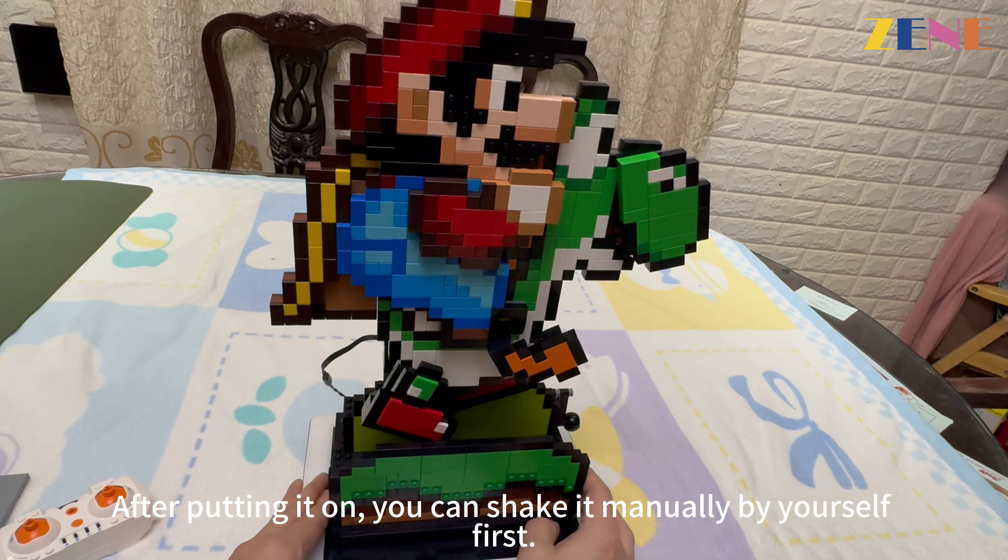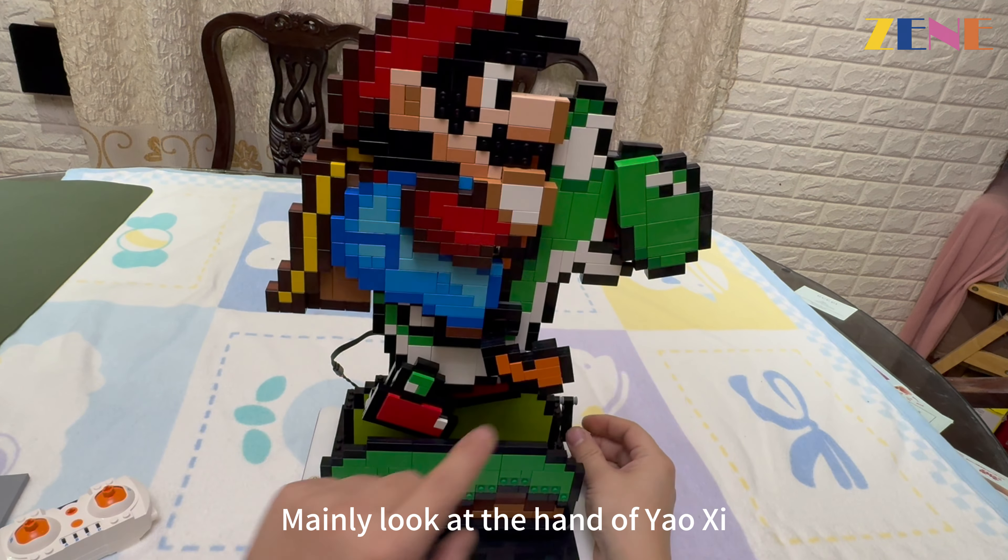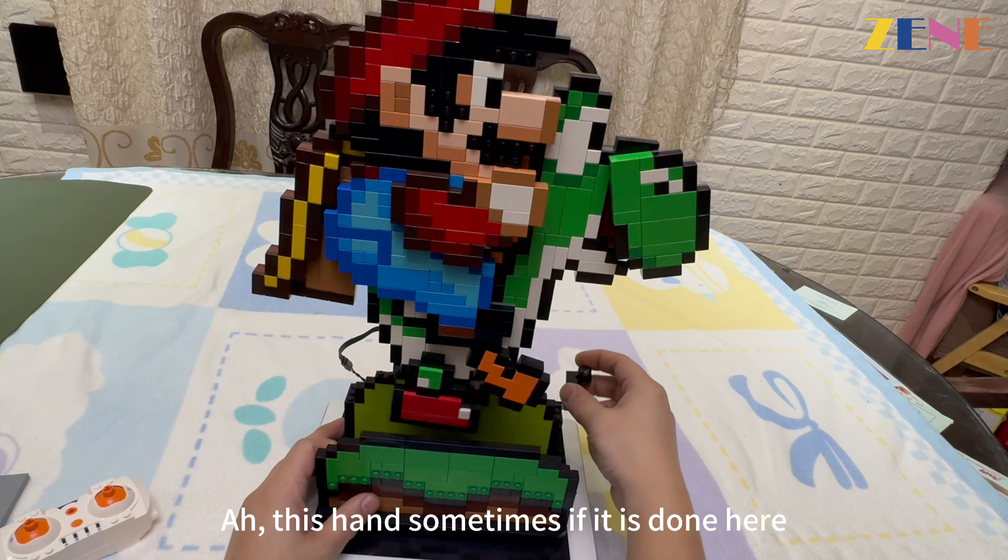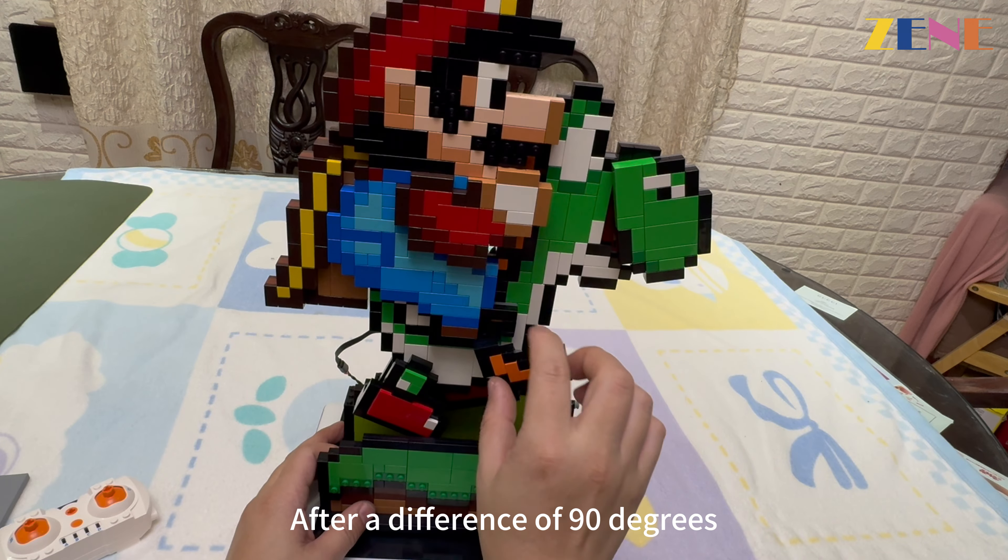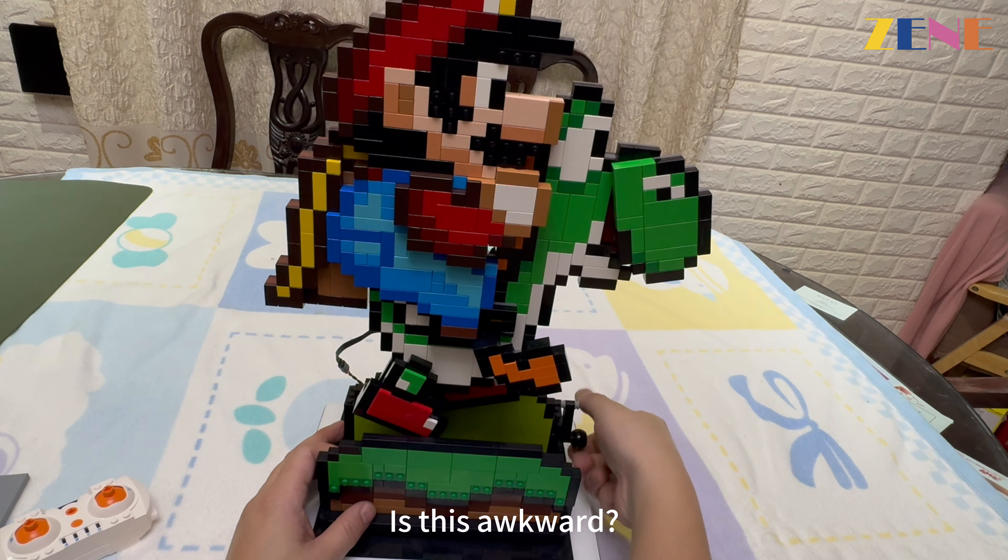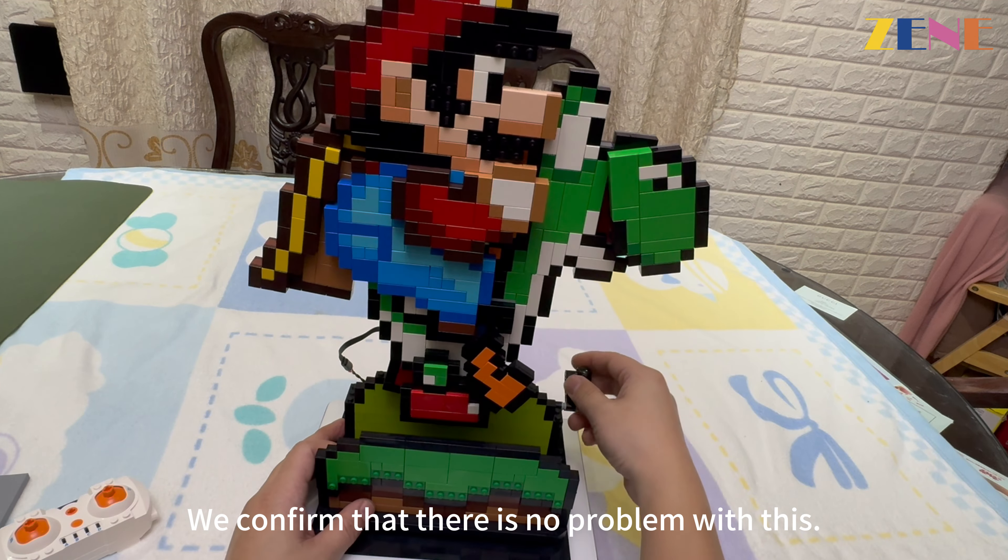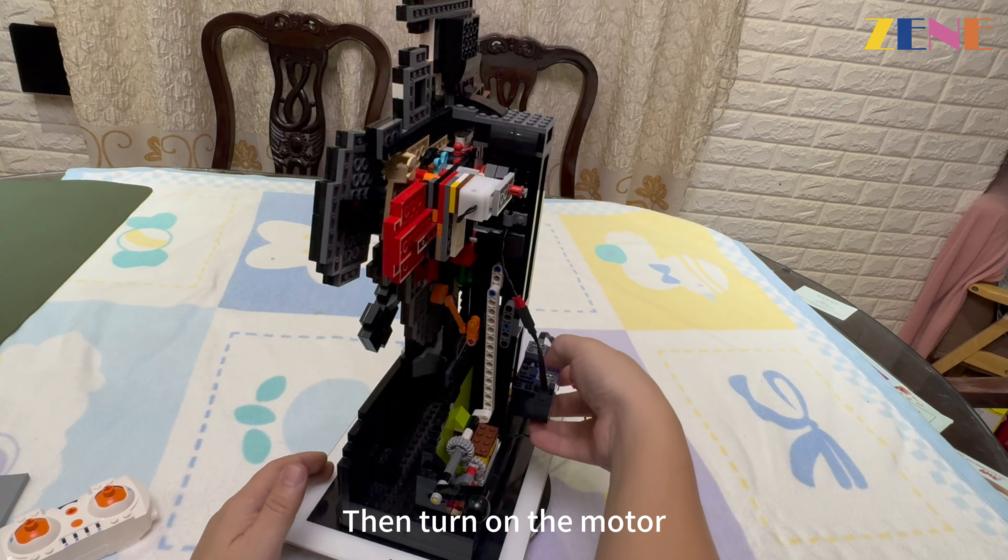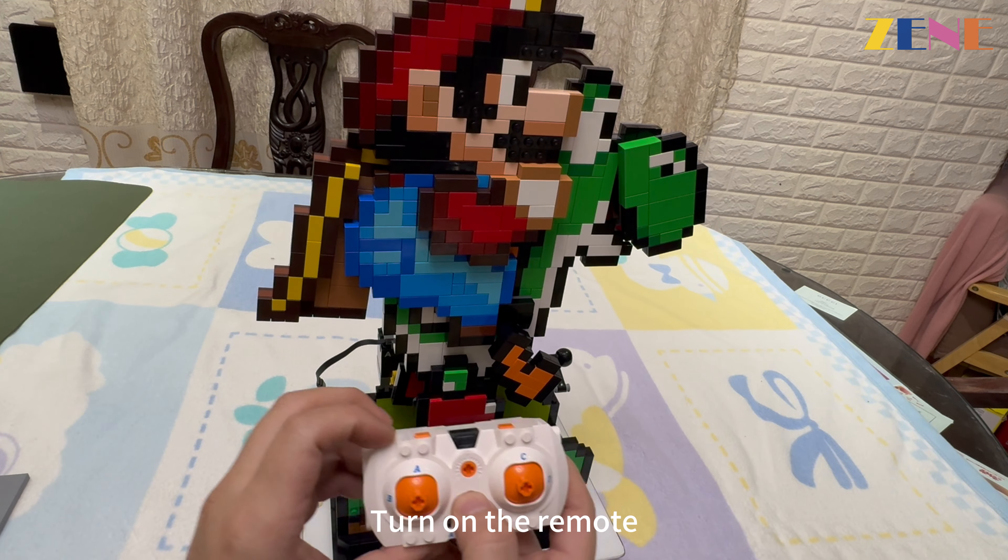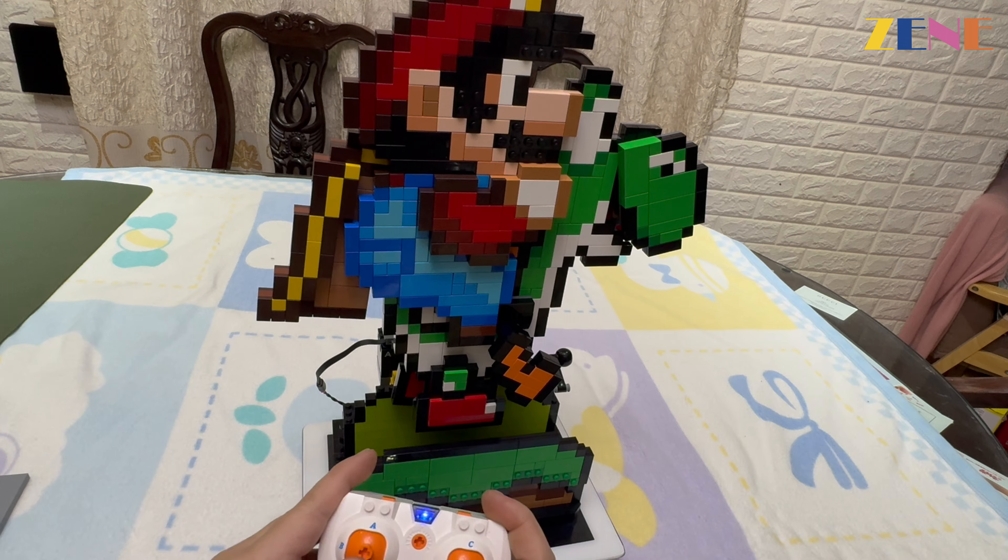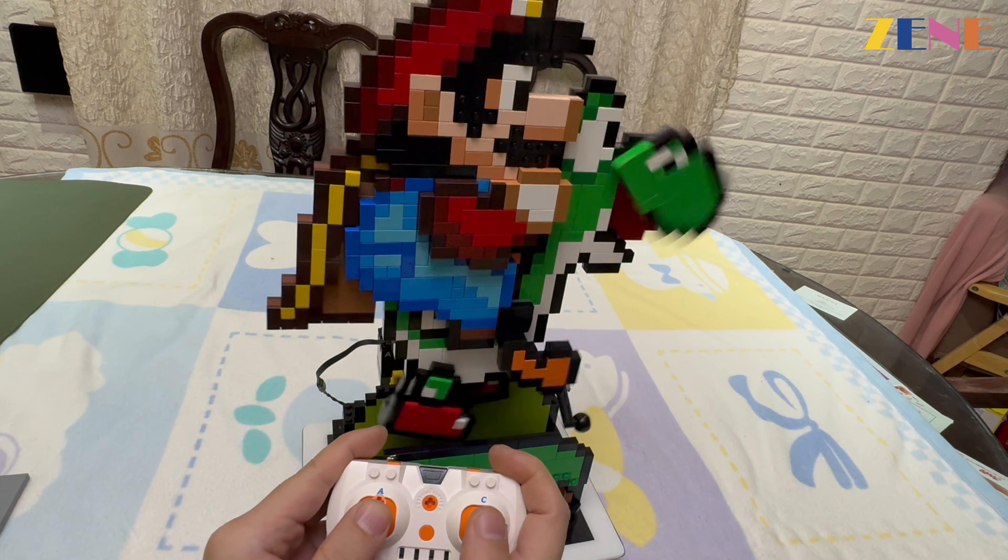Mainly look at the hand of Yao Shi. After a difference of 90 degrees, we confirm that there is no problem with this. Then turn on the motor, turn on the remote. Start and finish. That's it.